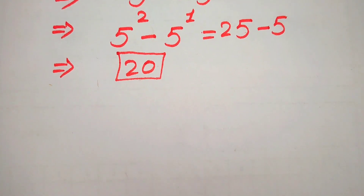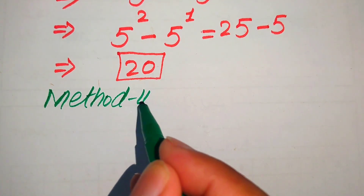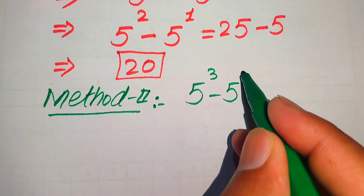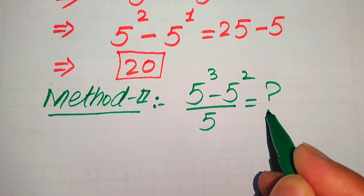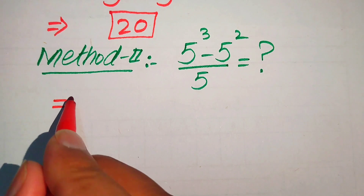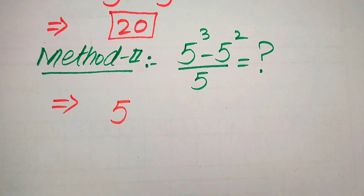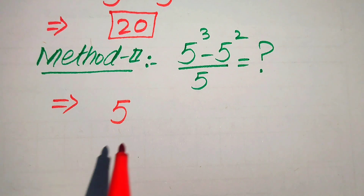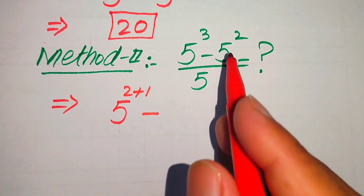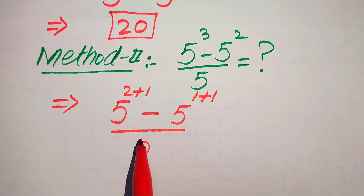Now we move to the second method. The given expression is 5 cubed minus 5 squared, divided by 5. In the second method, we focus on the numerator and rewrite 5 cubed as 5 to the power of 2 plus 1, and 5 squared as 5 to the power of 1 plus 1, all divided by 5.